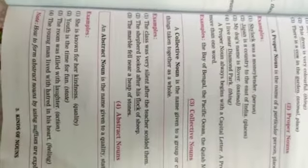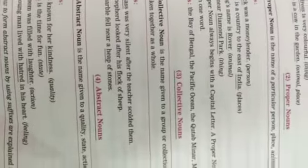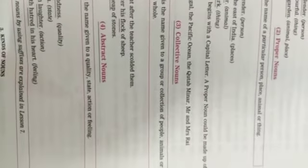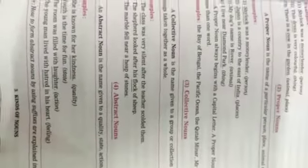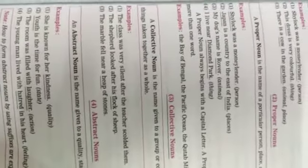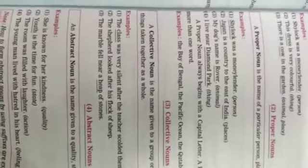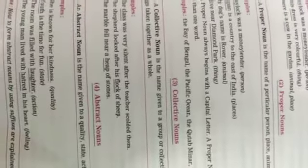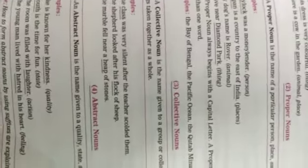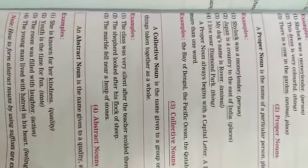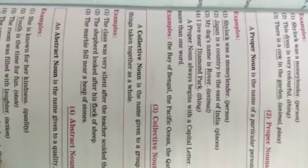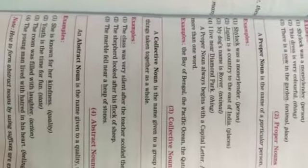Next is Collective Noun. Collective means group. A Collective Noun is a name given to a group or collection of people, animals or things taken together as a whole. Example: The class was very silent — class means a lot of students, so class is a Collective Noun. The shepherd looked after his flock of sheep — flock is a Collective Noun. The marble fell near a heap of stones — heap is a Collective Noun.